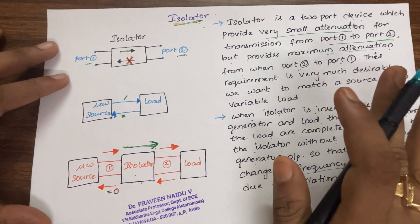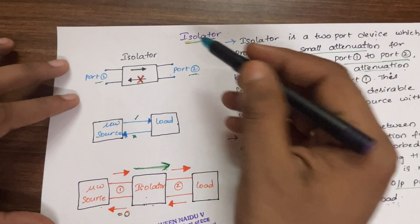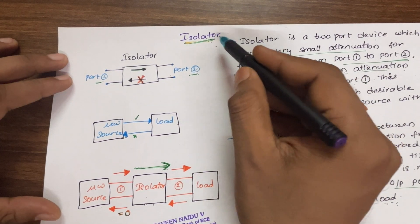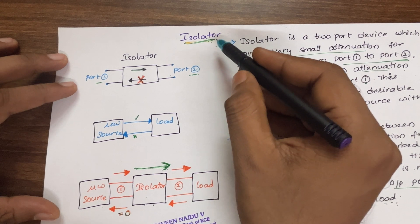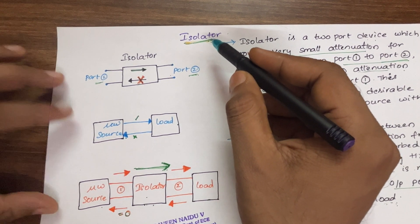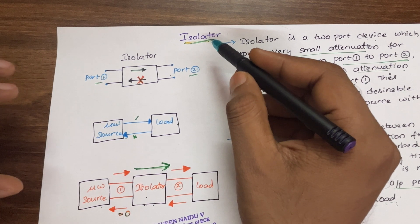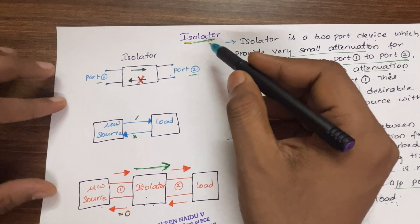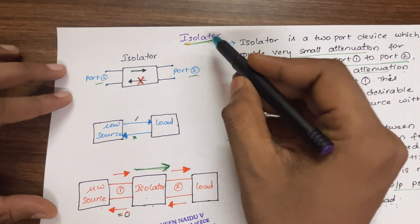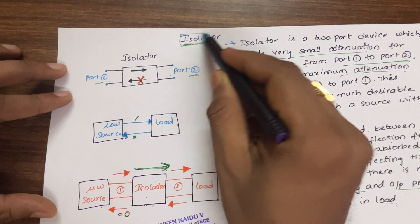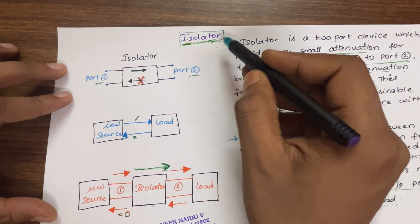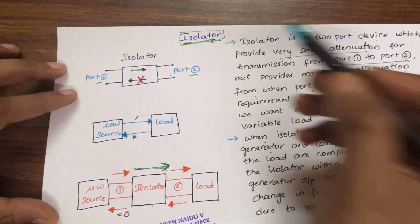That is the main requirement in microwave communication, and this problem can be solved by using a component called an isolator. If you look at a microwave bench setup, after the power supply you will have a microwave source, and after the microwave source and before the load you are going to find the isolator block or isolator device.